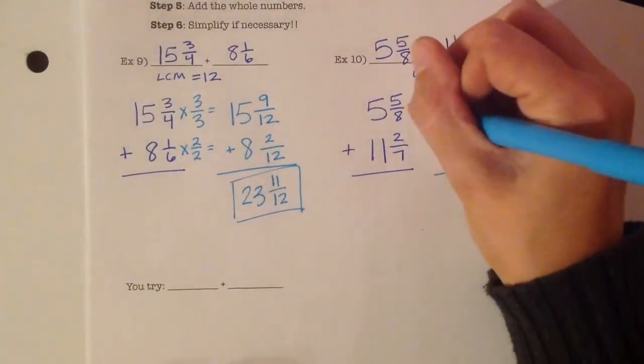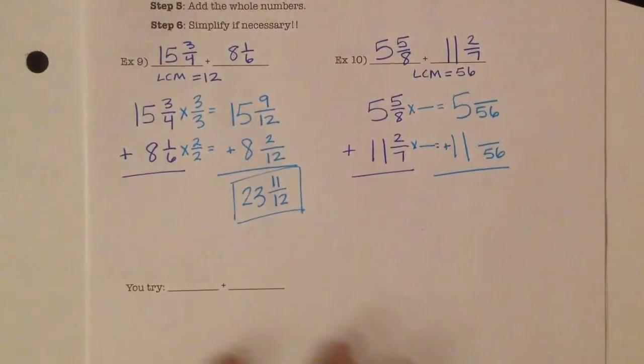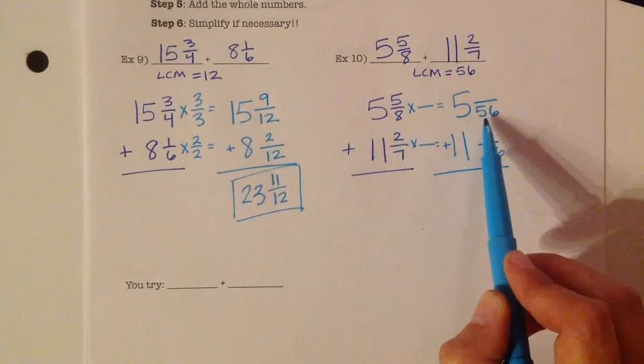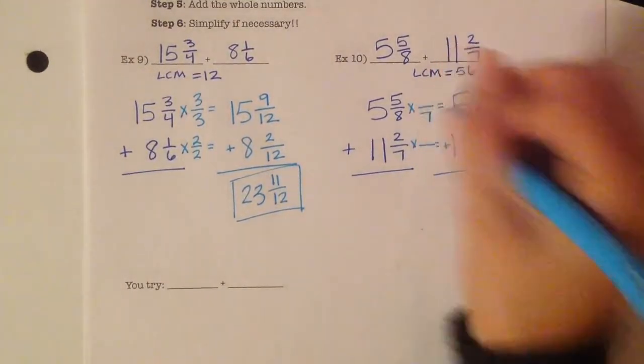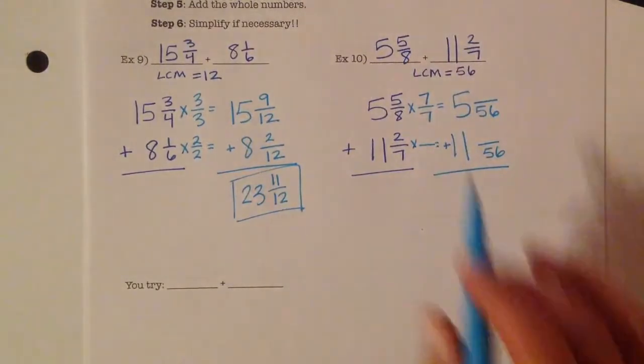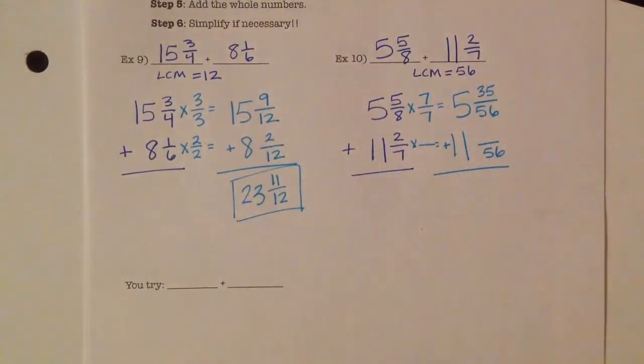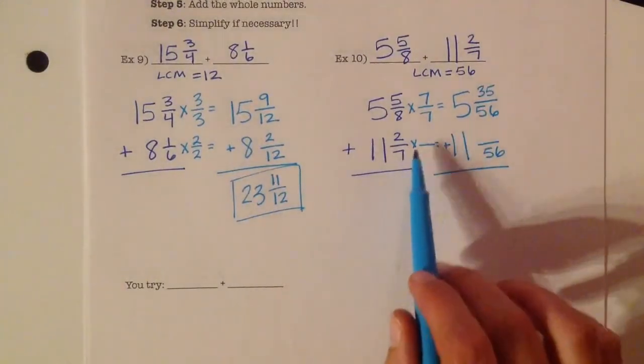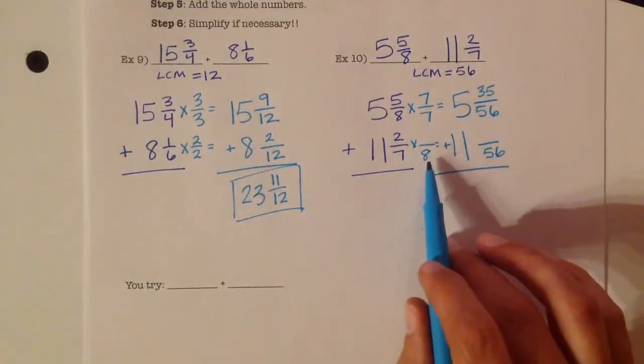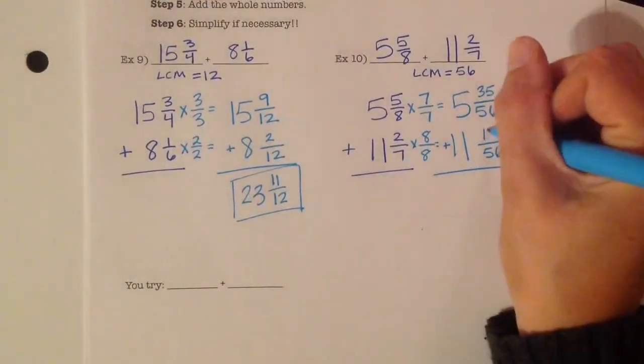I have to multiply the numerator and denominator by the same value to get to that denominator, 56. Here, we've got 8 times what is 56? 8 times 7. If I multiply the denominator by 7, I have to multiply the numerator by 7. 5 times 7 is 35. Here, I have to multiply 7 times something to get to 56. 7 times 8. If I multiply the denominator by 8, I have to multiply the numerator by 8. 2 times 8 is 16.